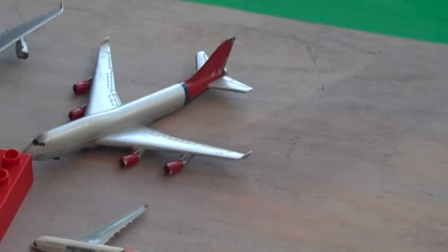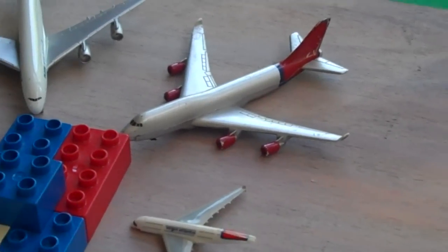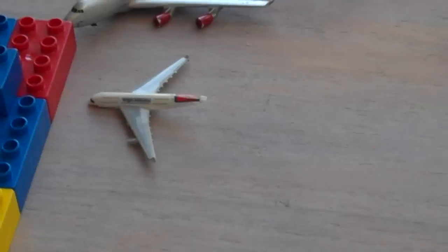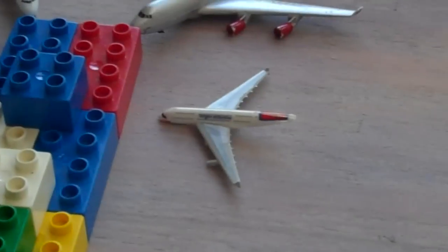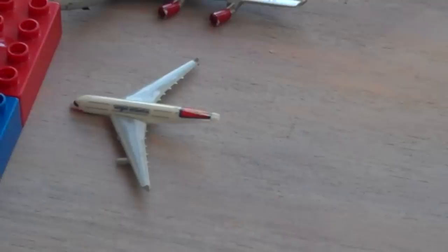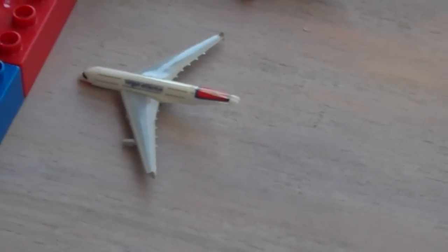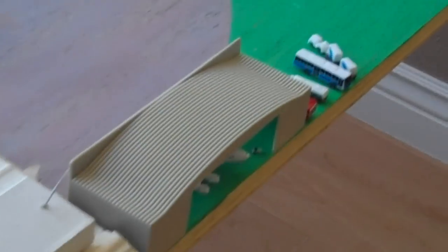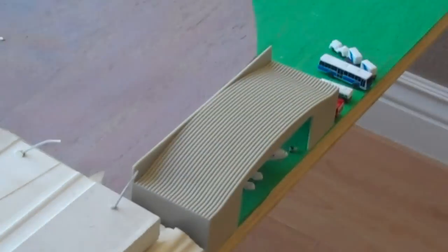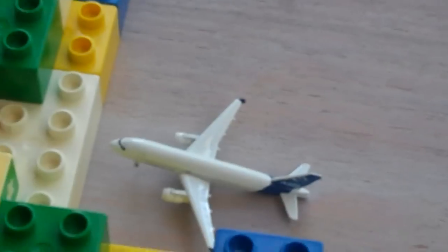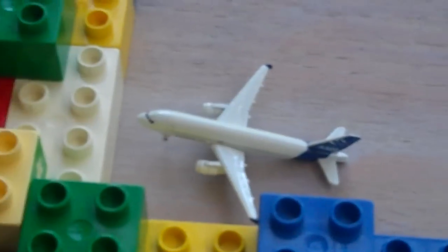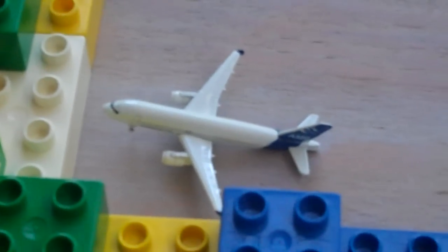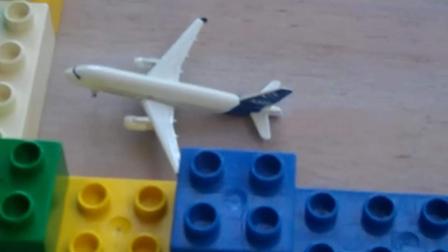A Virgin Atlantic 747 off to London Heathrow. A Virgin Atlantic again but this time A380 off to London Heathrow. This is an empty gate where the plane that's in the hangar over here usually is. And this is an Airbus A320 off to St. Martin Princess Juliana.